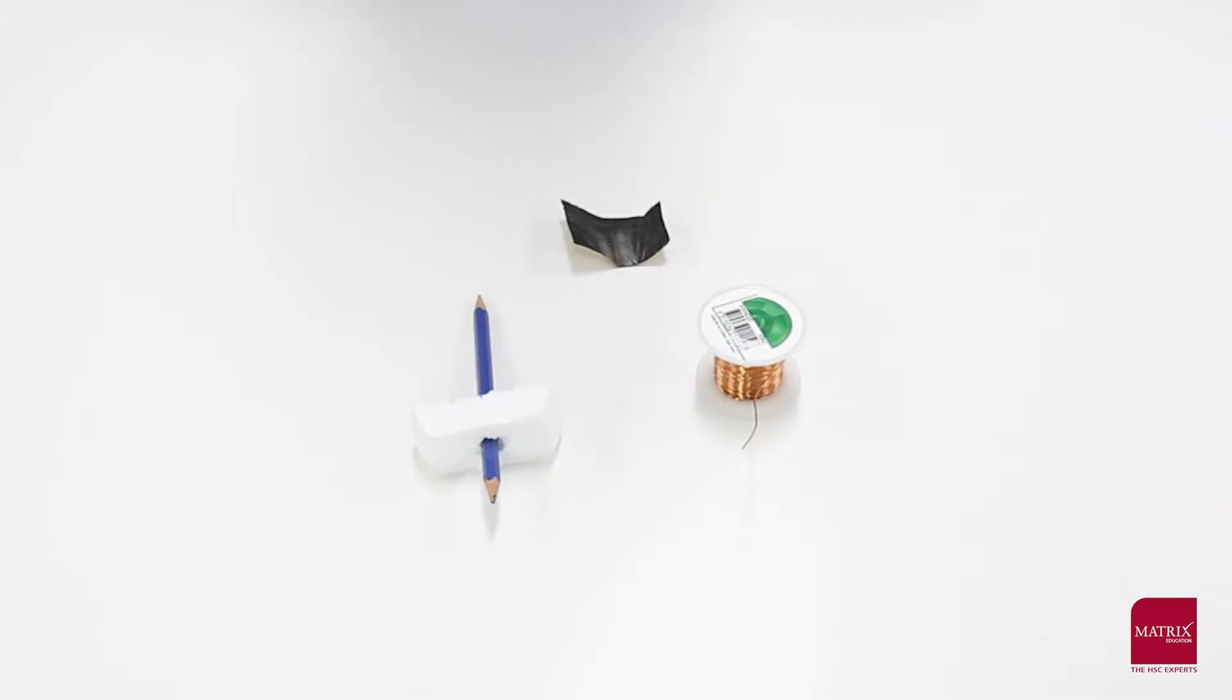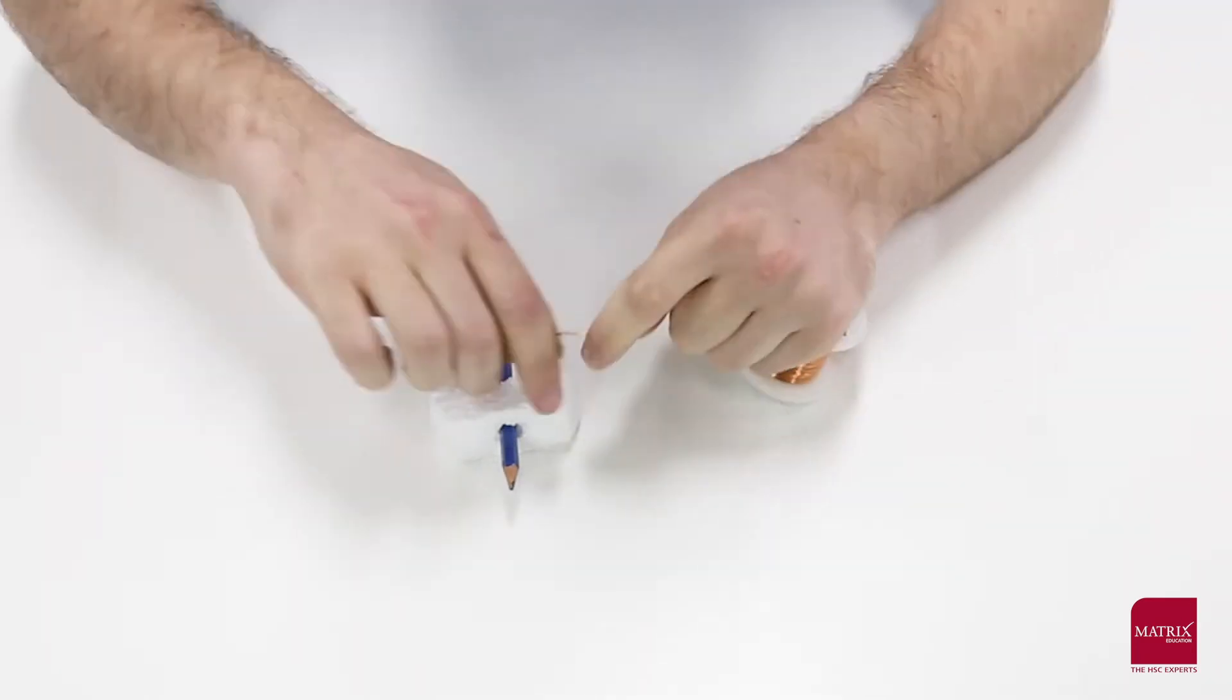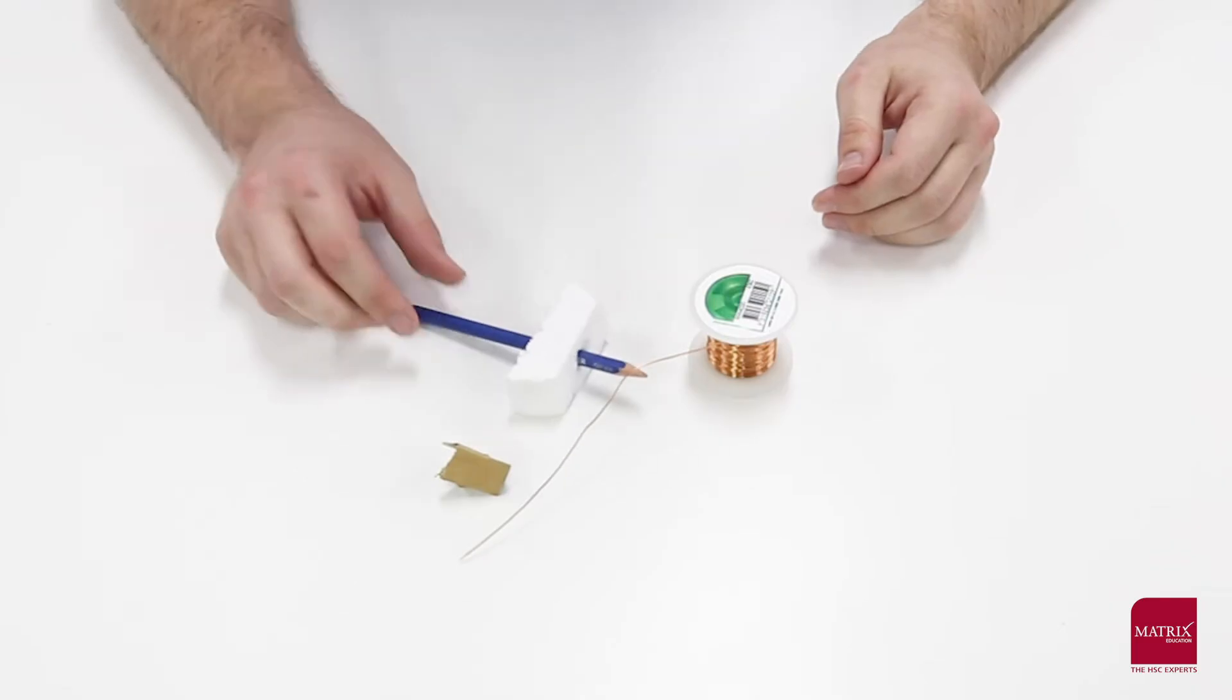Next we're going to make the coil wrapping around the coil base. To start, you need to strip the end of the copper wire so that it conducts electricity. For this you'll need some sandpaper.